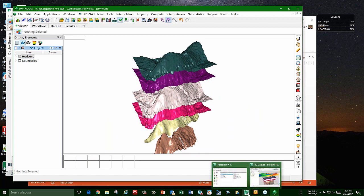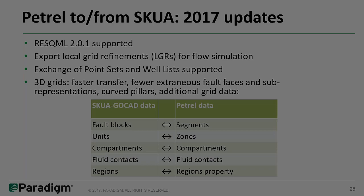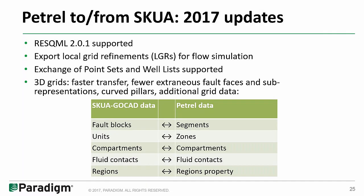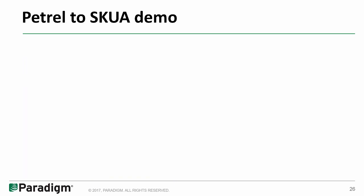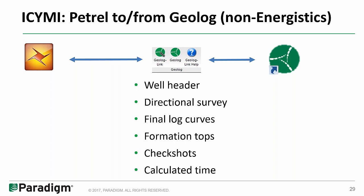A few more things are supported in 2017 for SKUA: local grid refinements where you need more grid cells next to a well, point sets and well lists as mentioned, and additional model characteristics including Petrel segments and zones, compartments, fluid contacts, and region properties — so more features for model transfer. We also exchange data between Petrel and GeoLog, though this is not using Energistics standards. It moves one-dimensional well data: well header, directional survey, log curves, tops, check shots, and time logs.